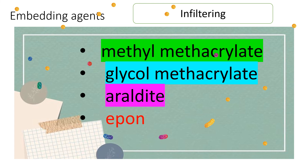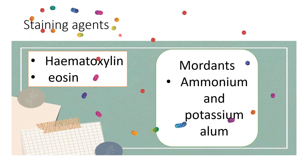The last step is sectioning with the help of a microtome. The staining agents are hematoxylin and eosin, which are the most commonly used staining agents. Some mordants are also used to help retain the stain by the dye — ammonium and potassium alums are the mordants. Why we use hematoxylin and eosin and these mordants in electron microscopy as well as light microscopy will be discussed in the next video lecture.